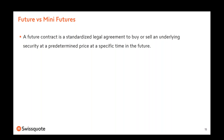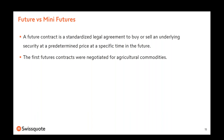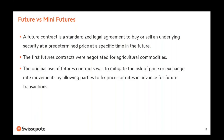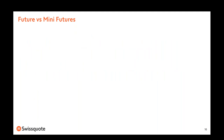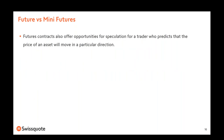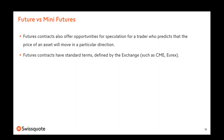For those who already trade futures, here is a useful comparison. A future contract is a standardized legal agreement to buy or sell an underlying security at a predetermined price at a specific time in the future. The original use of futures was to mitigate the risk of price or exchange rate movements. But most of the time, futures also offer the opportunity for speculation: if you think the market will go up, you buy a future; if you think the market will go down, you open a short position.